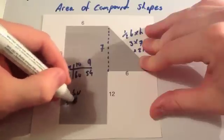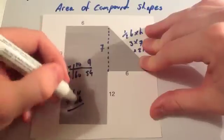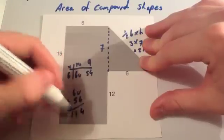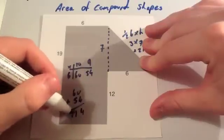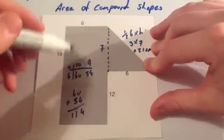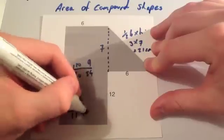So 60 plus 54. When we add those together, we get 4 and 11. There's 114. So the area of the rectangle is 114 centimeters squared.